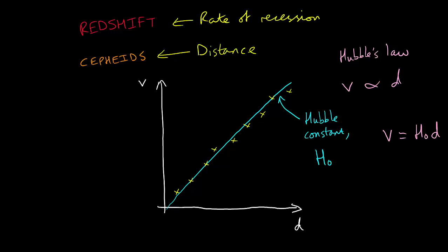The Hubble constant is the gradient of a velocity against distance graph. We know that distance divided by velocity equals time, so the Hubble constant must be 1 divided by time. We can check this by looking at the units. Typically, we use units of kilometres per second and megaparsecs on the graph.